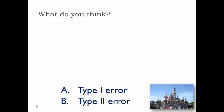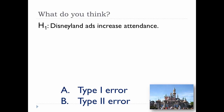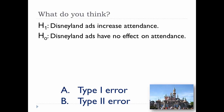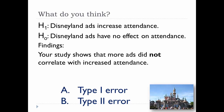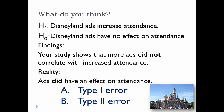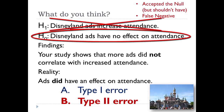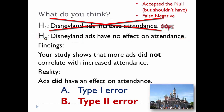Here is a question for you. Assume your alternative hypothesis is that Disneyland's ads increased attendance at the park, and your null hypothesis is that the ads have no effect on attendance. You do a research study and conclude that the ads did not correlate with increased attendance. But unbeknownst to you, the ads were actually effective and did influence attendance. Perhaps you did your study on an off day. So we obviously have an error — but what type is it? It's Type 2, because you accepted the null hypothesis when your findings may have been due to chance or sampling error, meaning you had a false negative.